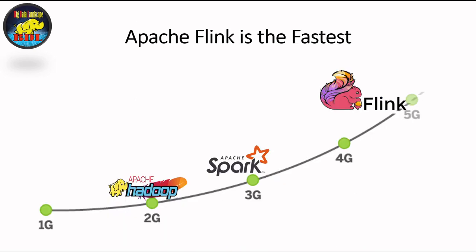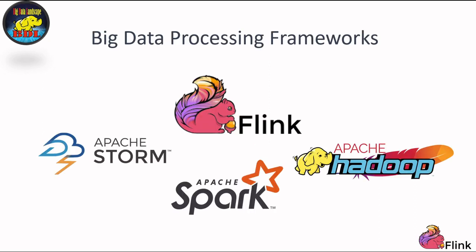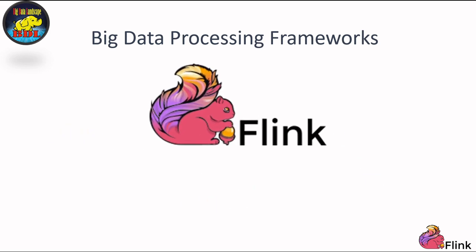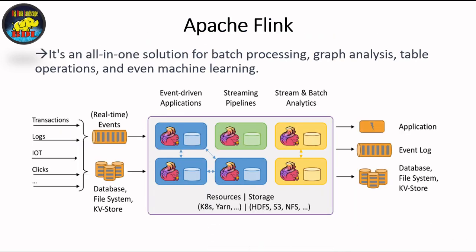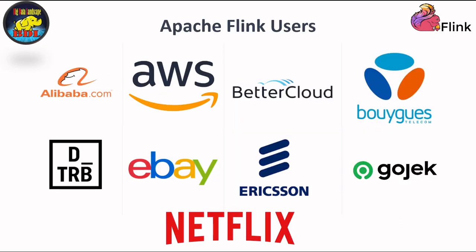Picture it this way: if Hadoop was 2G and Spark was 3G, then Apache Flink is the 5G powerhouse of big data stream processing. But Flink offers much more than stream processing — it's an all-in-one solution for batch processing, graph analysis, table operations, and even machine learning. Major industry players like Alibaba and Netflix rely on Flink for real-time stream processing. And now you can too.